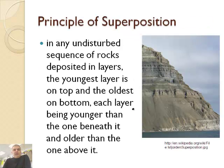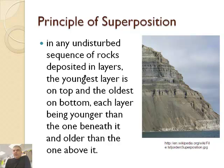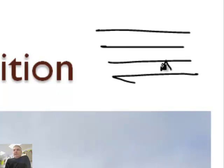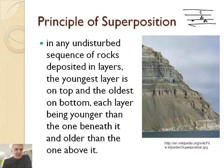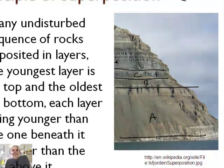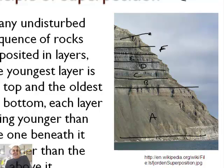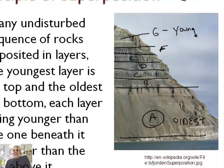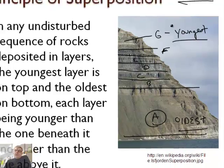Now we want to learn about how we can tell how old rocks are. The first principle is the principle of superposition. If you have an undisturbed sequence of rocks deposited in layers — A, B, C, et cetera — the youngest layer is on top and the oldest on the bottom, each layer being younger than the one beneath it. If we look at this picture, we can label layers A through G. A would be the oldest rock and G would be the youngest. It's easy to see when they're in nice flat layers, but sometimes they don't always follow that pattern.